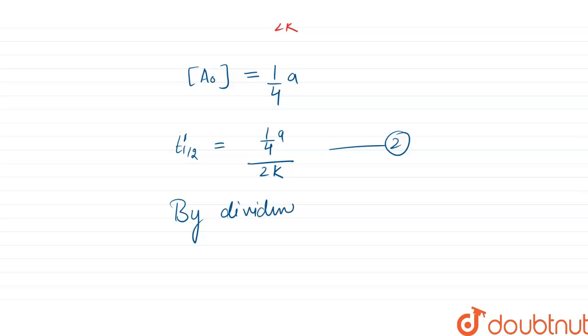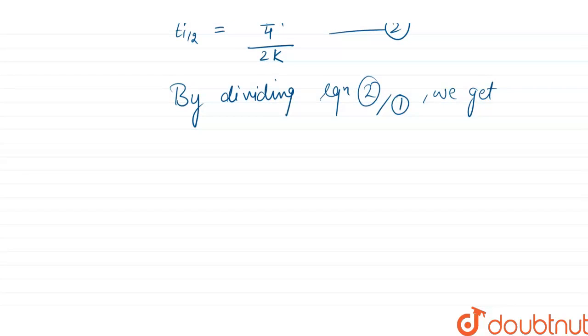dividing equation 2 by 1, we get that is T dash half by T half equals to 1 by 4 A upon 2k upon A upon 2k.